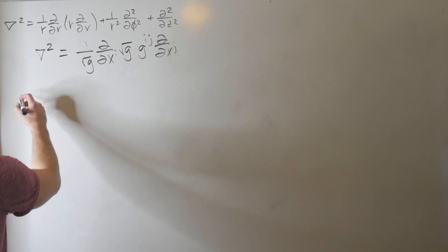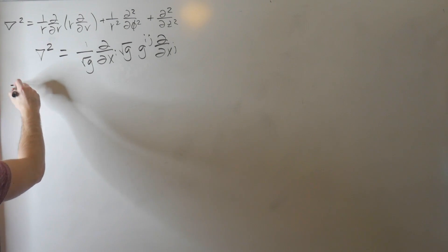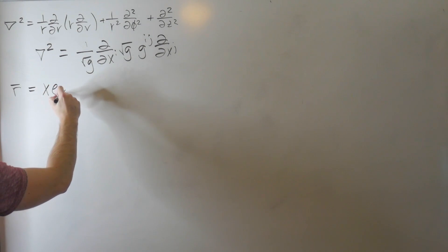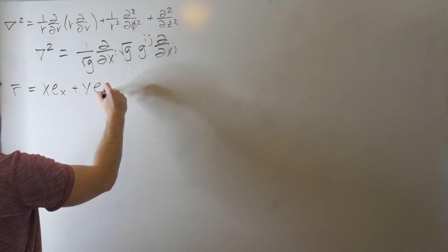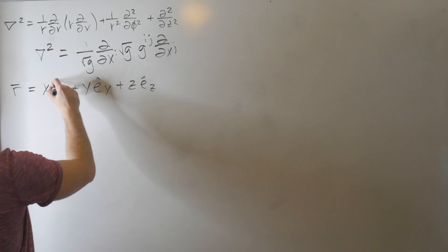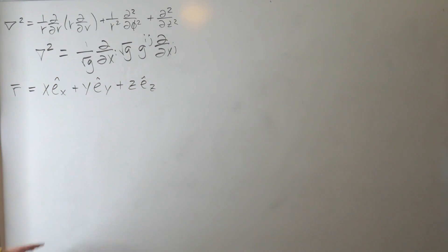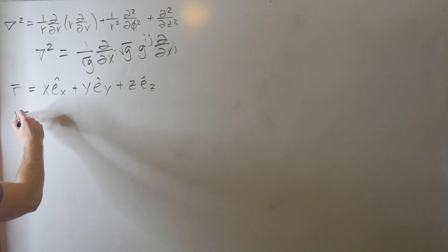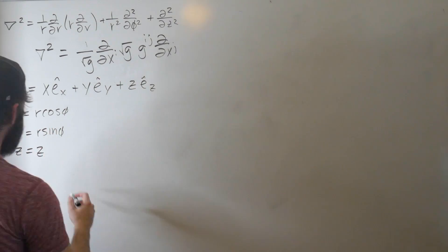Well, if we start off with our position vector in Cartesian coordinates, say x e_x plus y e_y plus z e_z, we want to write this in terms of cylindrical coordinates. In cylindrical coordinates we know that x equals r cosine phi, y equals r sine phi, and z doesn't change.